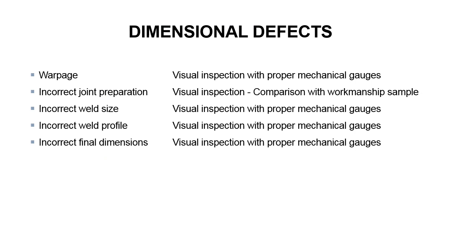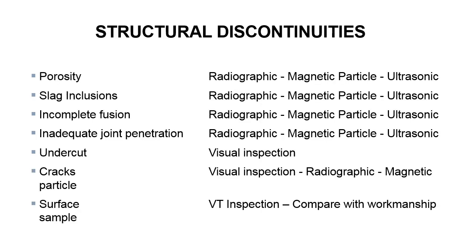In addition to the other types of flaws, there are dimensional defects. Dimensional defects are typically identified by visual inspection using mechanical gauges. These include warpage, incorrect joint penetration, incorrect weld size, incorrect weld profile, and incorrect final dimensions. You might recognize some of these structural discontinuities: porosity, slag inclusions, incomplete fusion, inadequate joint penetration, undercut, cracks, and surface issues.